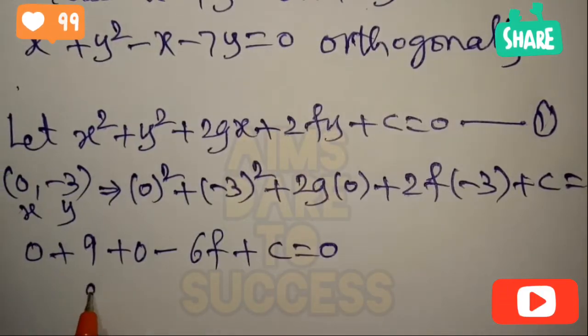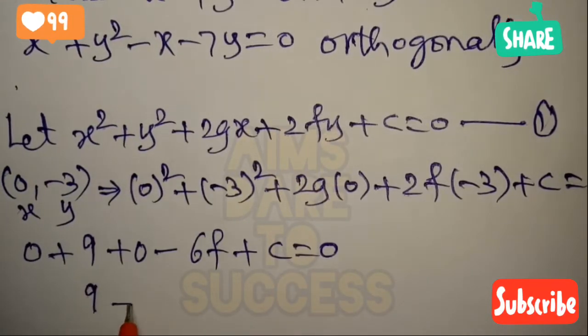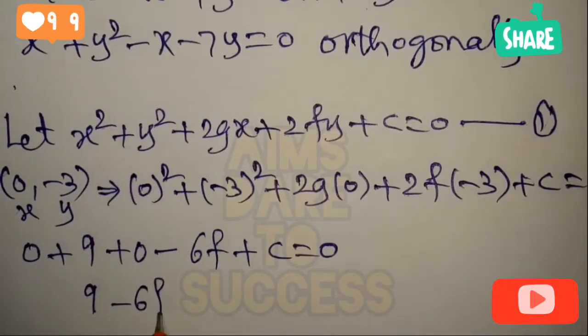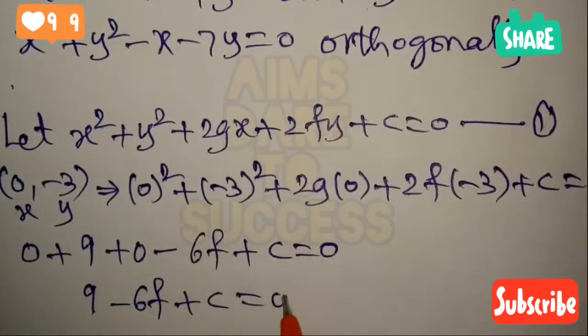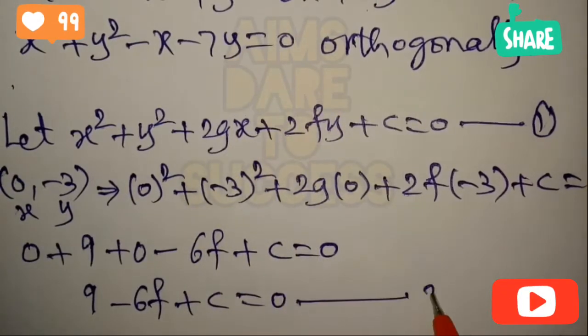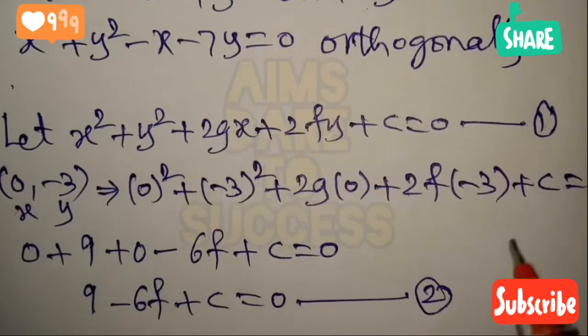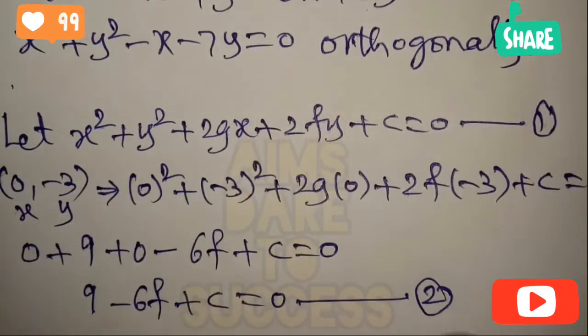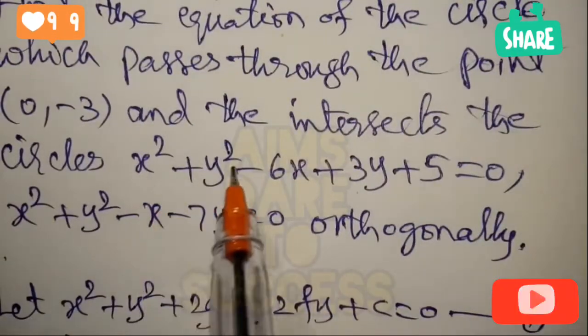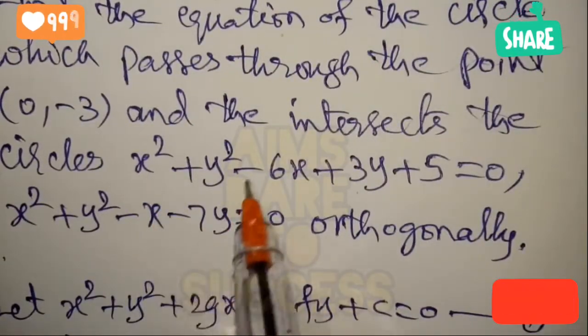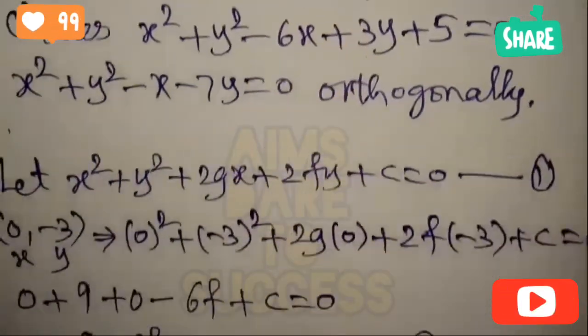So the remaining values give us 9 - 6f + c = 0. Let this be equation 2. The next step involves the two given circles which the required circle cuts orthogonally.